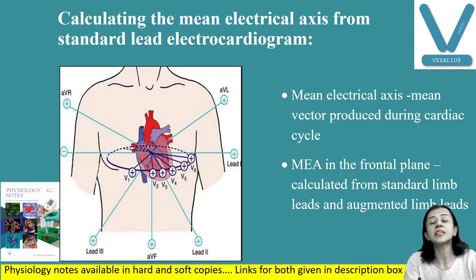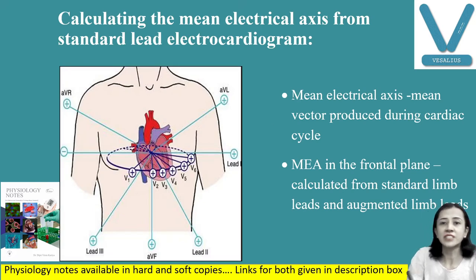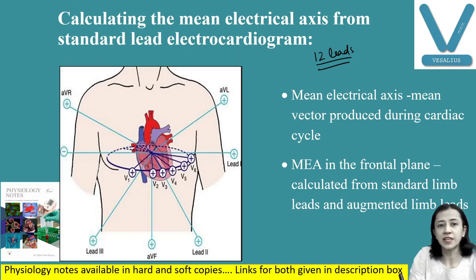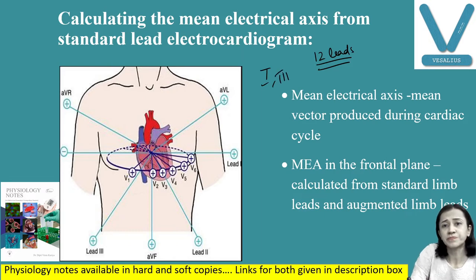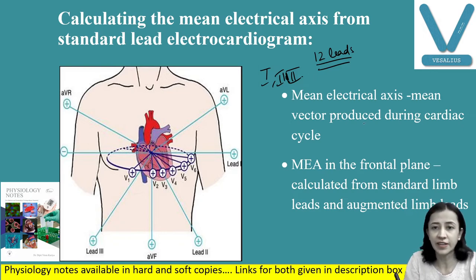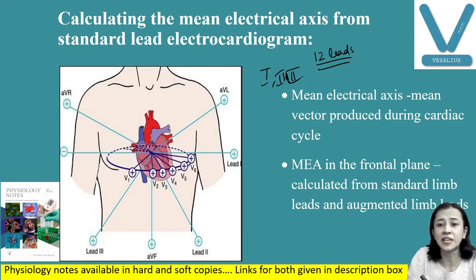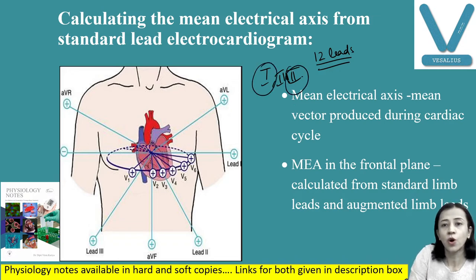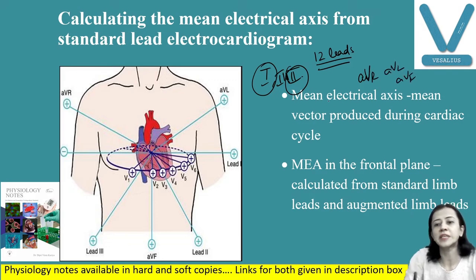How can we calculate the mean electrical axis from standard limb leads? As discussed in our last class, there are 12 leads: V1 to V6 are precordial leads; leads 1, 2, and 3 are bipolar limb leads; and AVR, AVL, and AVF are augmented leads. The mean electrical axis in the frontal plane can be calculated using any two standard limb leads or any two augmented leads — either AVR, AVL, or AVF.